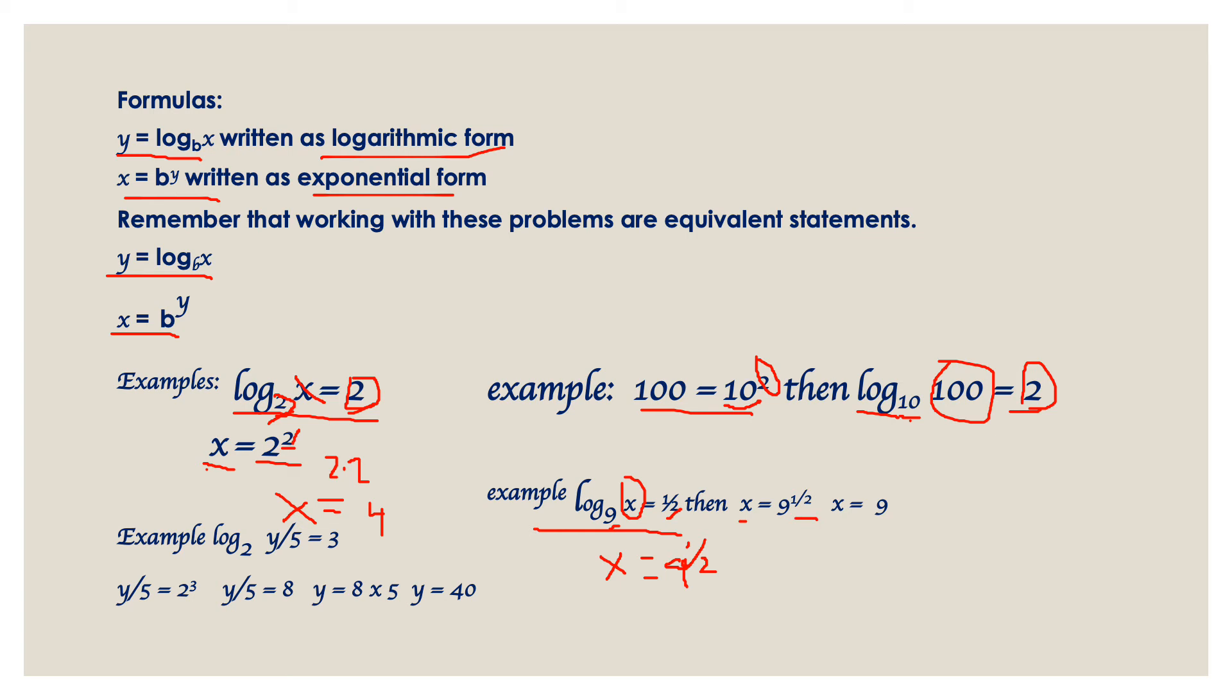See here, this form. Since our exponent is a fraction, make sure you are going to find the square root. The square root of 9, because the exponent is a fraction. Our x value here is 3. Square root of 9 is 3. That's the value of our x.